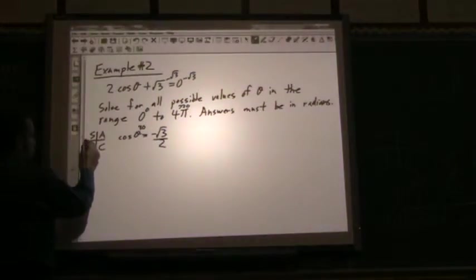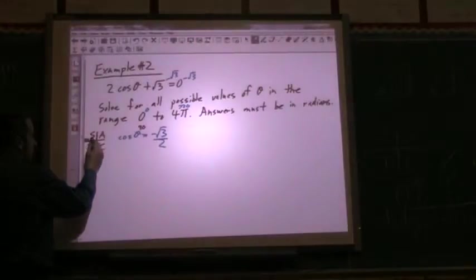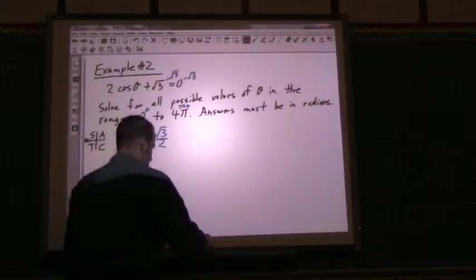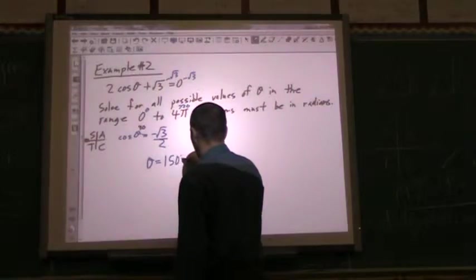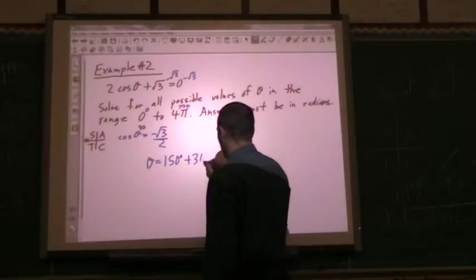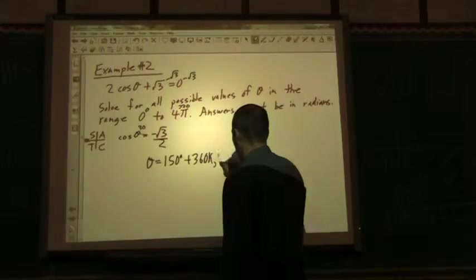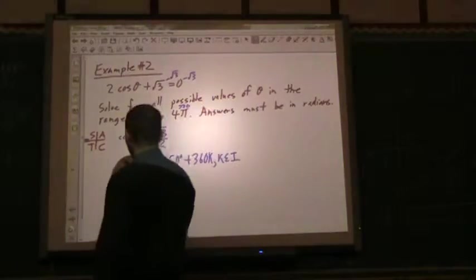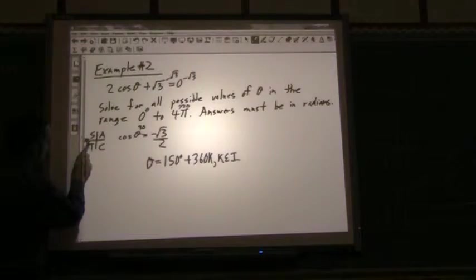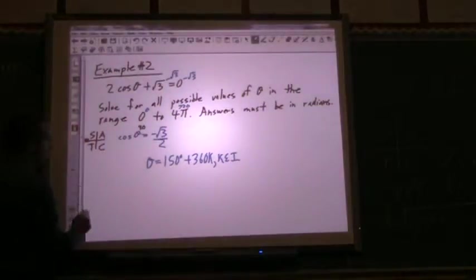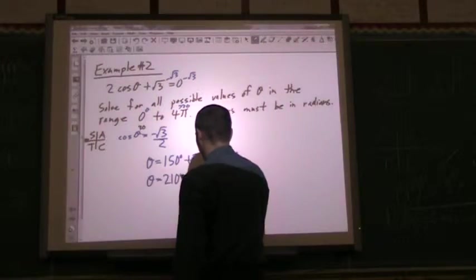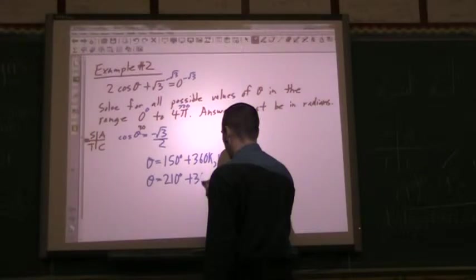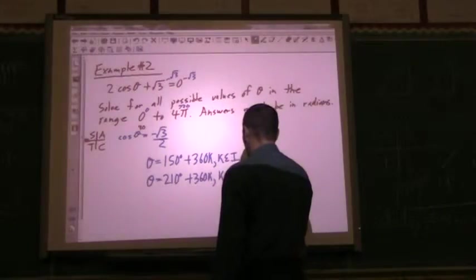So 30 degrees away from 180 into the second quadrant would be 150 degrees. So one of my answers is theta equals 150 degrees, and then, of course, plus 360k, where k can be an integer. And my other answer is 30 degrees into this quadrant, so 30 away from 180 down into this quadrant is going to give me 210. And then, of course, plus my 360k, where k is any integer.